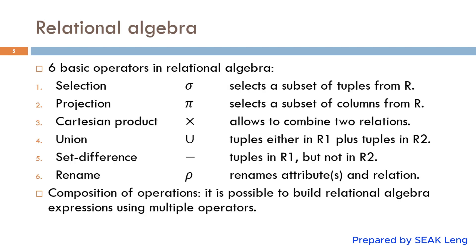There are six basic operators in relational algebra, namely: selection, projection, Cartesian product, union, set difference, and rename. We will study each operator in detail with a number of examples in the following slides.